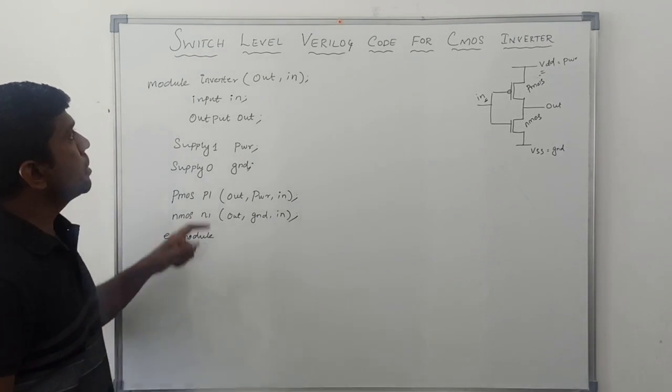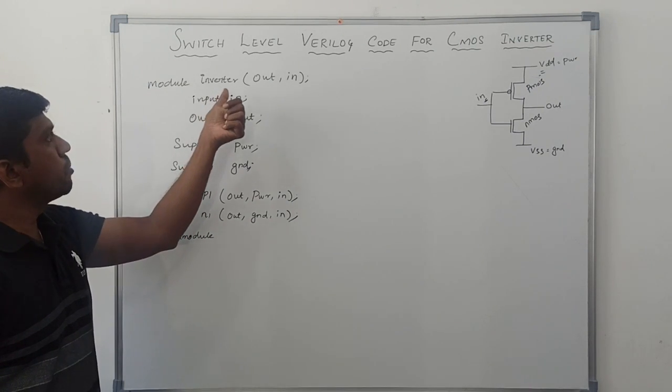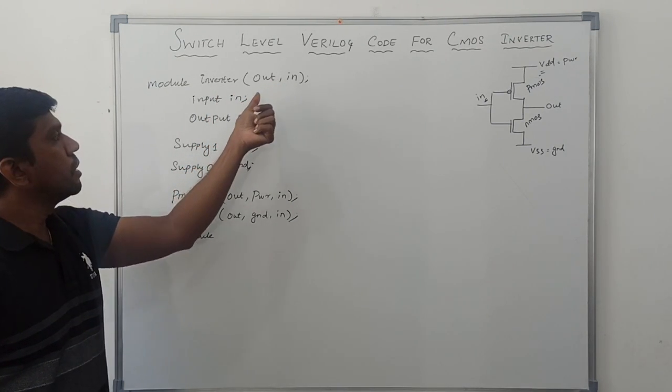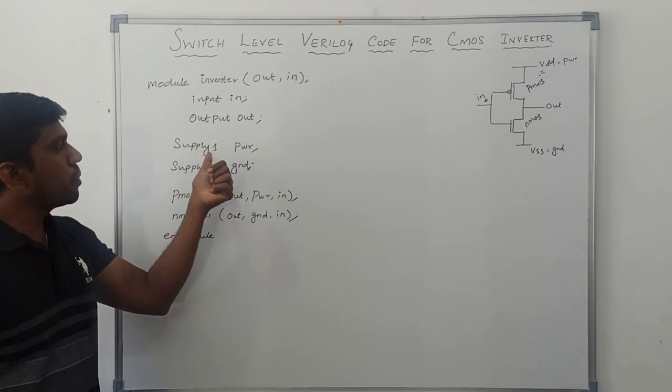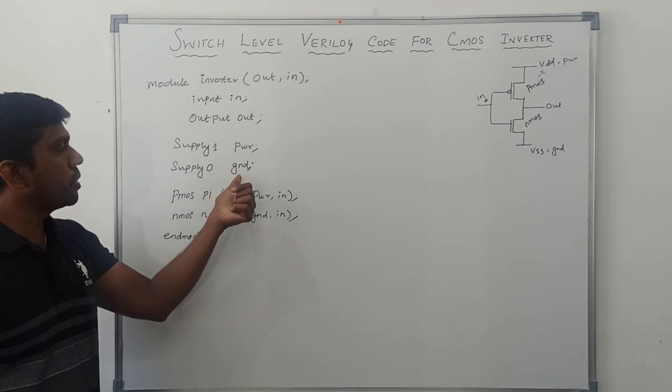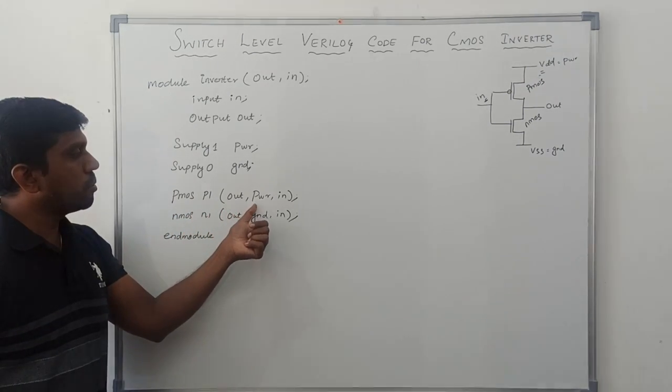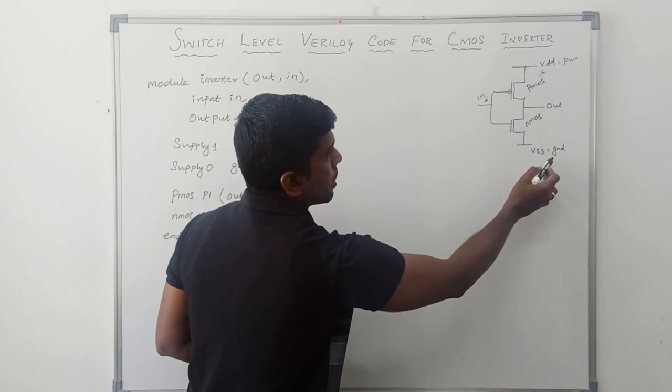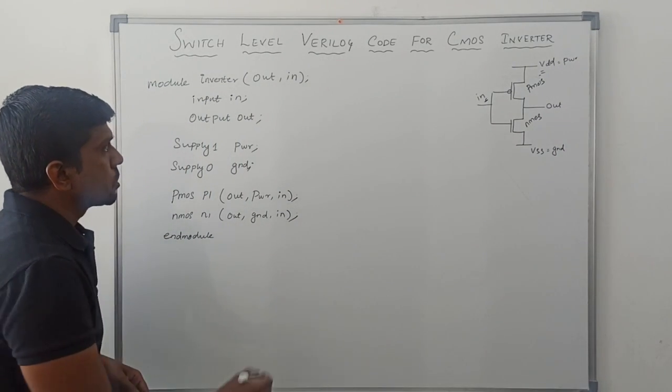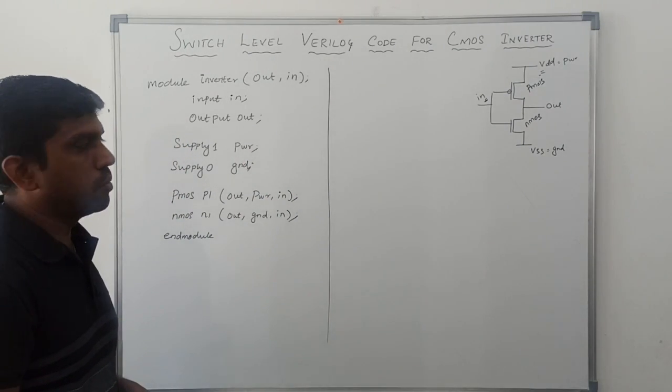So this is the switch level Verilog code for CMOS inverter. First you write module, module name, then out, in. After that, declaration of input variable and output variable. Supply 1 refers to power, supply 0 refers to ground. PMOS transistor P1, out, PWR, in. And NMOS transistor out, ground, and in.